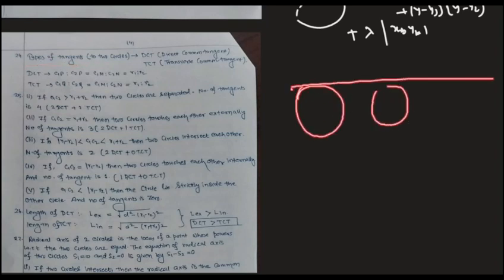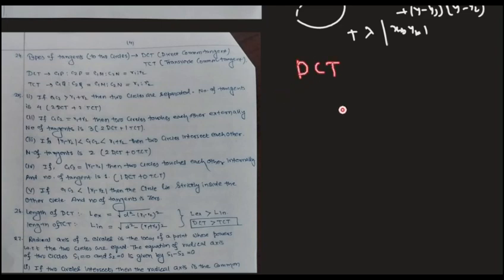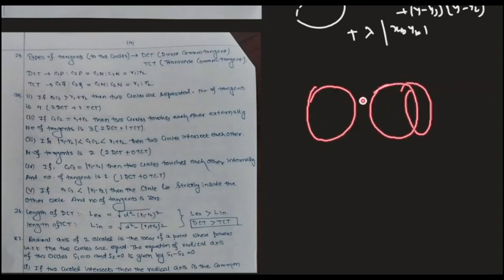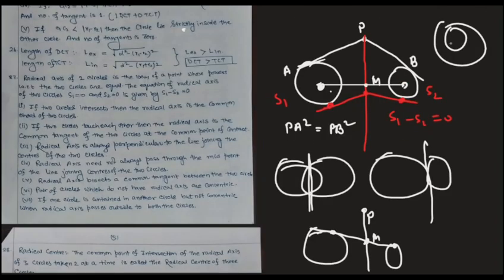So one type of tangents are there when you have the tangent, then your common tangents having the circle on the same side. So this is called the DCT, that is direct common tangent. Here you are getting the circle which are concentric.